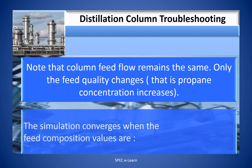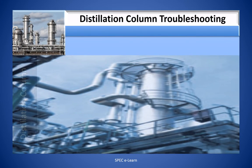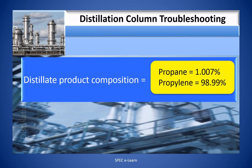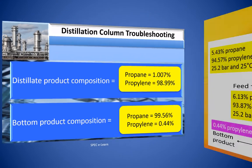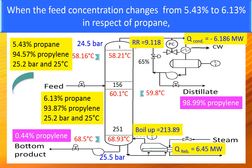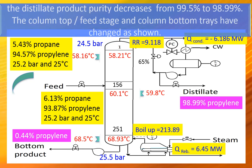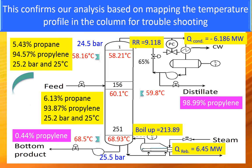Note that the column feed flow remains the same; only the feed quality changes — that is, the propane concentration increases. The simulation converges when the feed composition values are propane 6.13% and propylene 93.87%. Distillate product composition: propylene 98.99%. Bottom product composition: propane 99.56%, propylene 0.44%. The simulation results show that when the feed concentration of propane changes from 5.43% to 6.13%, the distillate product purity decreases from 99.5% to 98.99%. Column top, feed stage, and bottom temperatures change accordingly, confirming our analysis based on mapping the temperature profile.